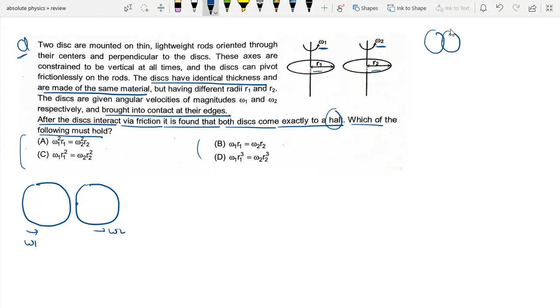These are the points that are in contact. When they are rotating, one is going this way and the other that way. The friction will act to stop the motion.